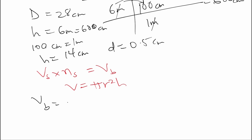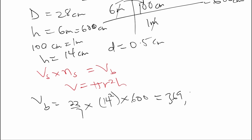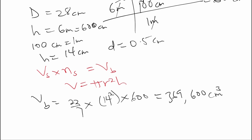The volume of the bigger cylinder equals pi, which is 22 over 7, times r squared. Since r equals d over 2, and the diameter is 28, half of 28 is 14. So r is 14. That gives us 22 over 7 times 14 squared times the height 600, which gives us 369,600 cubic centimeters.